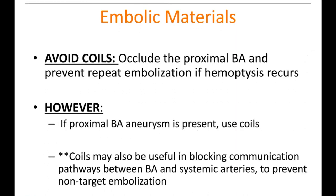Coils should generally be avoided, except in a few conditions. If you occlude the proximal bronchial artery with coils and the patient bleeds the next day, you cannot get back in — which is a problem if repeat embolization is needed. However, if you see an aneurysm, we treat it like an aneurysm and coil it off. Coils may also be used to block communication between bronchial arteries and systemic arteries to prevent non-target embolization.